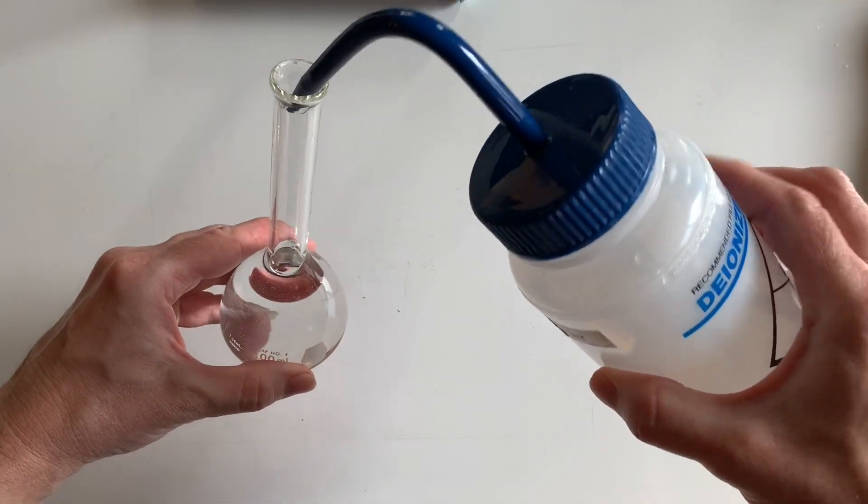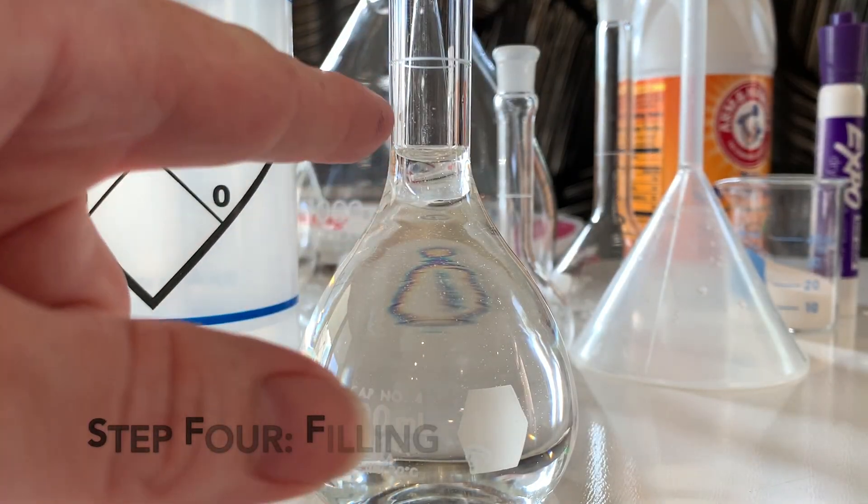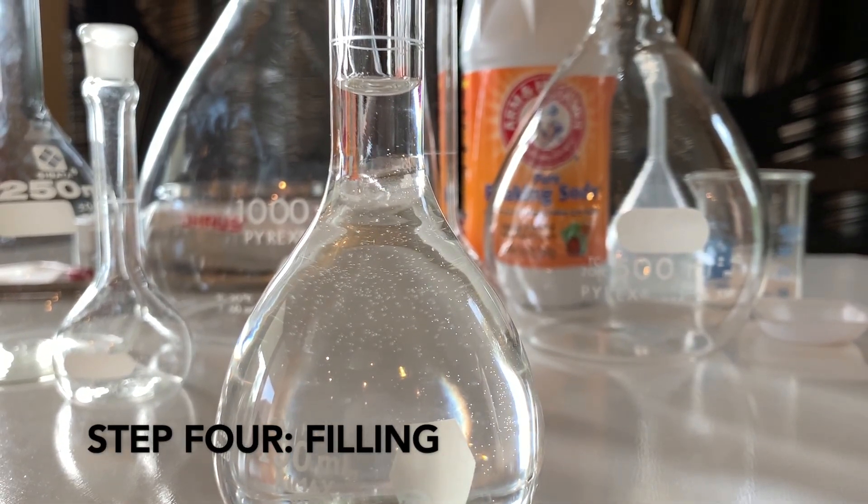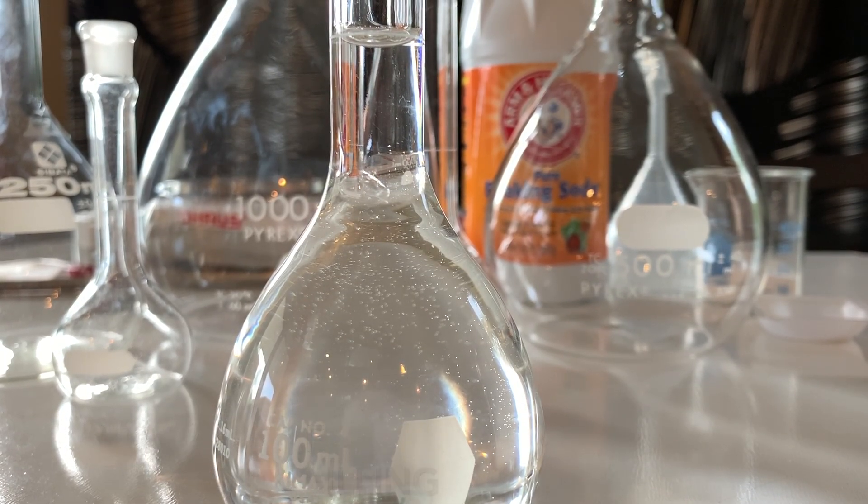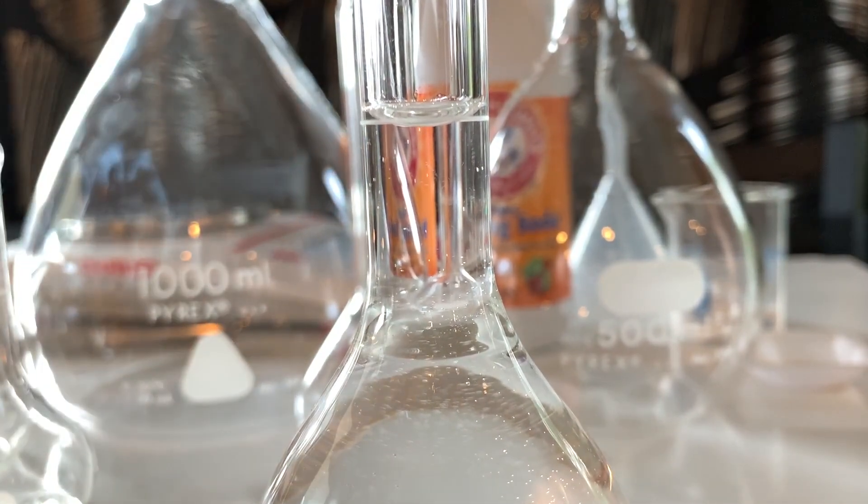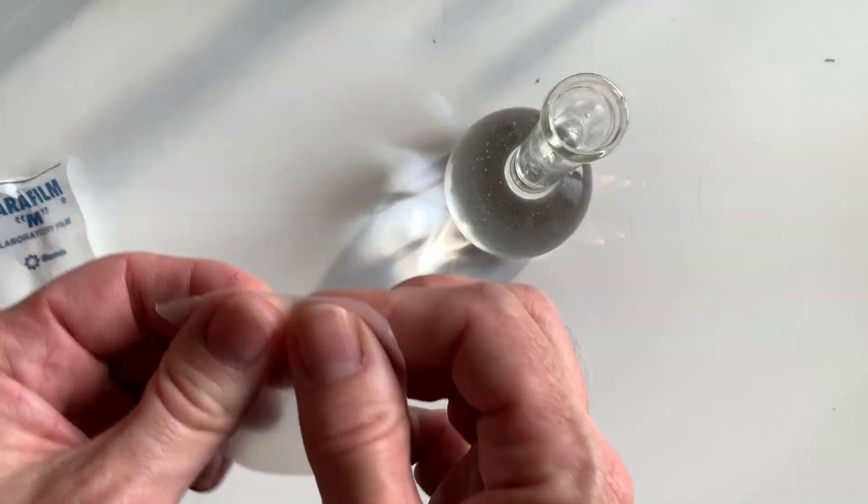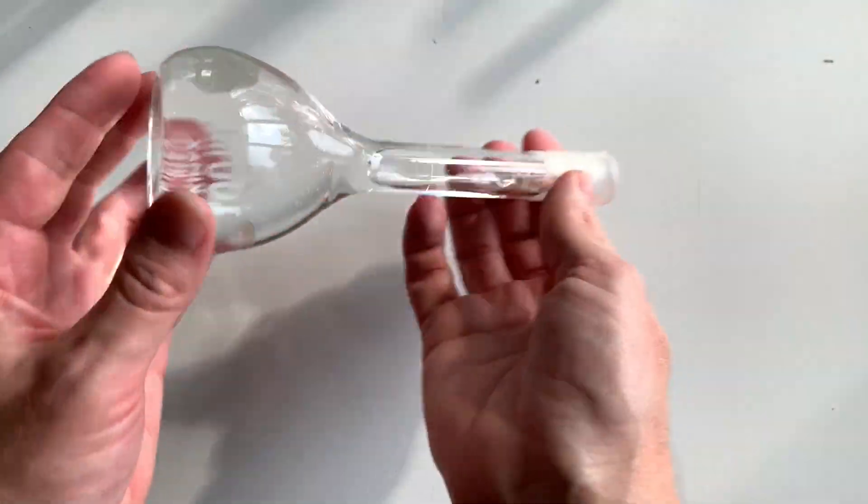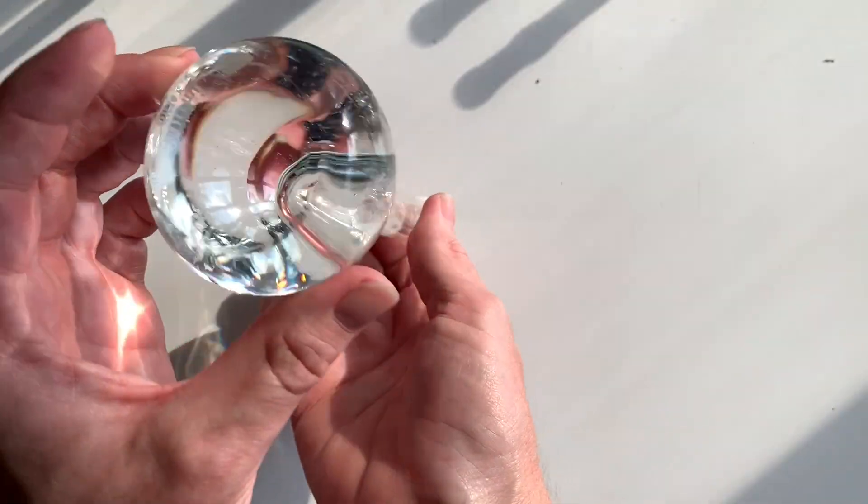The final step of making a solution is filling exactly to the line that is on the volumetric flask. Do not go past the line or your solution will be too dilute because you added too much solvent. When a solution forms, it's common to see bubbles. Those are just trapped air bubbles in your solvent that are being pushed out by the dissolving of your solute and your solvent. So for good measure, it's a good idea to cover your volumetric flask one more time, invert it, and make sure that all of the solution has formed and all the solute has dissolved in the solvent. As long as your meniscus is right on that line, you can use your solution.